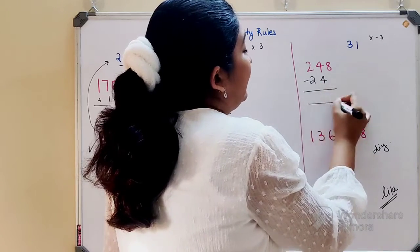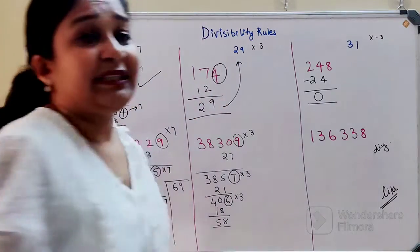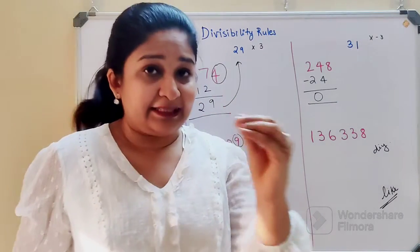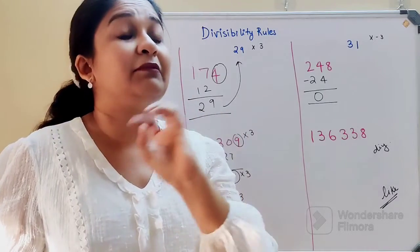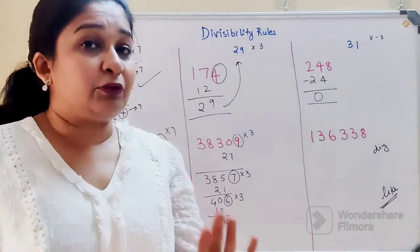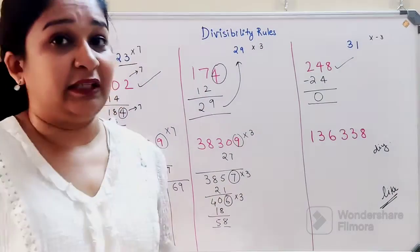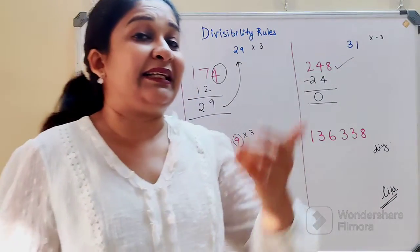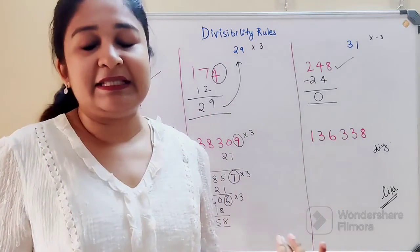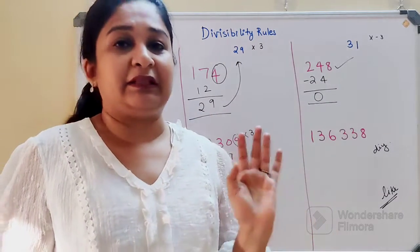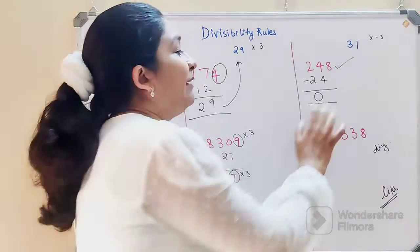When you do this calculation, you get 0. Understand, whenever you're multiplying a negative number, there's a high chance you get a negative answer or 0. If it comes out to be 0, then the number is completely divisible by 31. But if it's a negative number which cannot be divided by 31, then it's not divisible. But 99.99% of the time you will not get a negative answer.